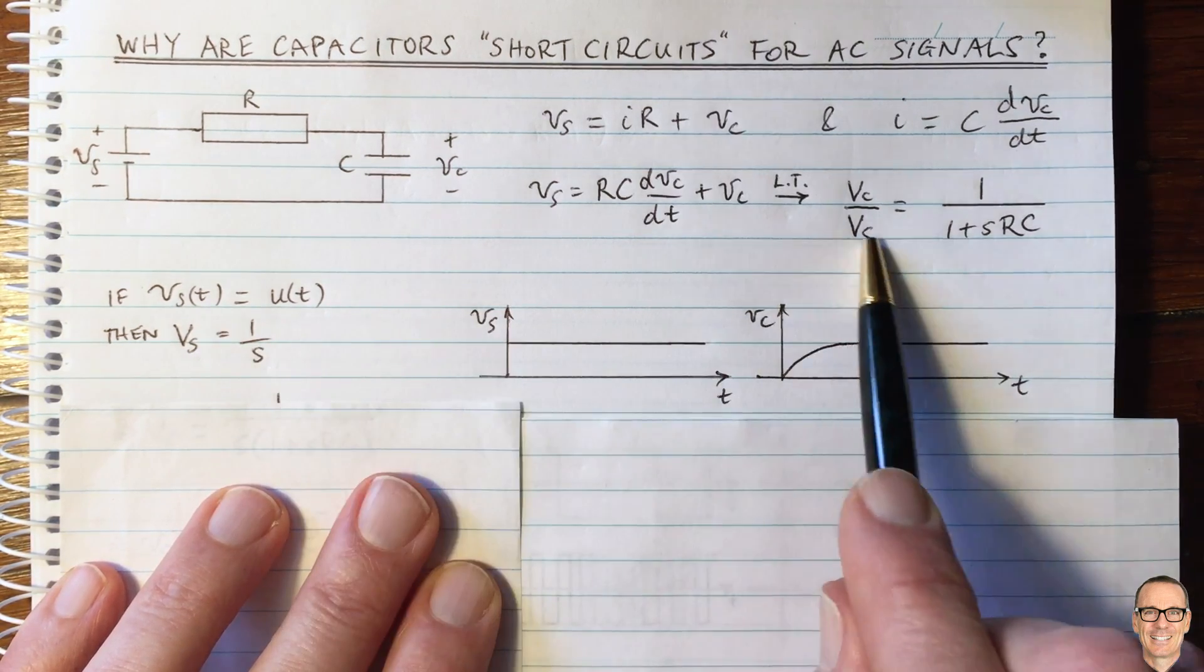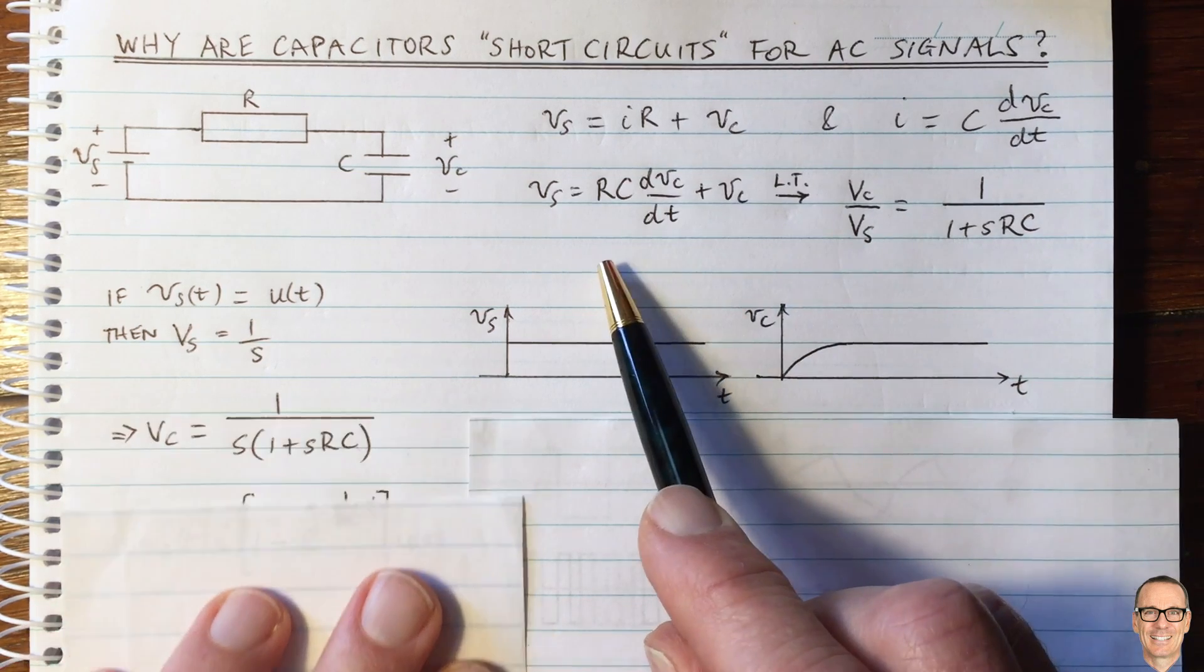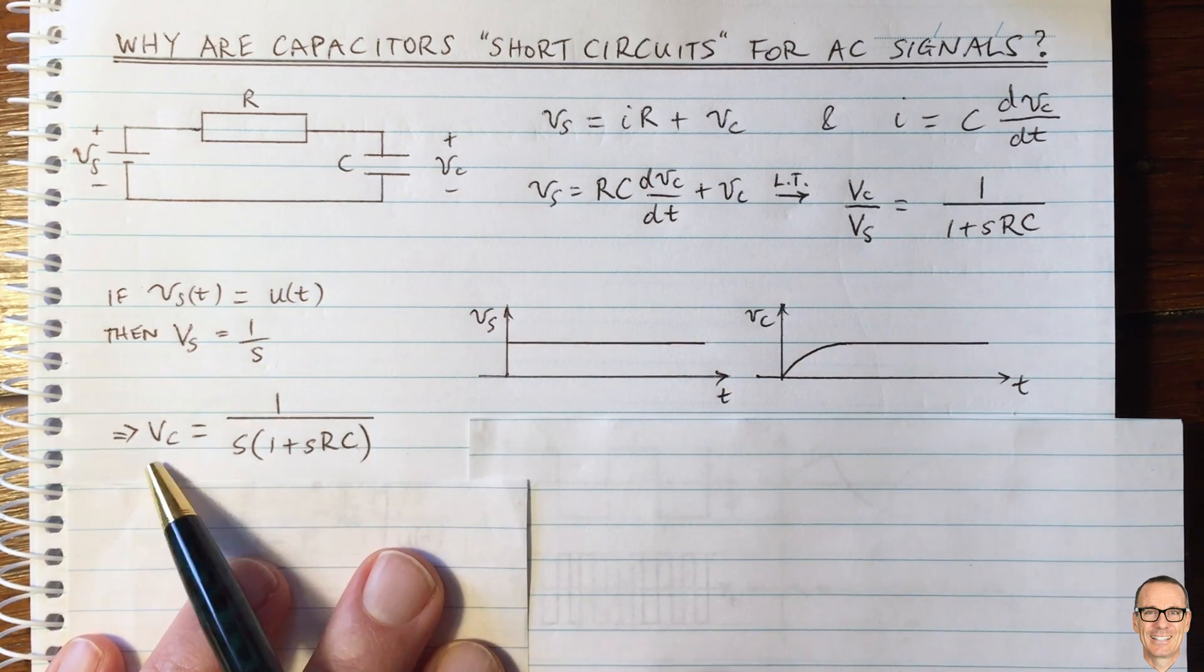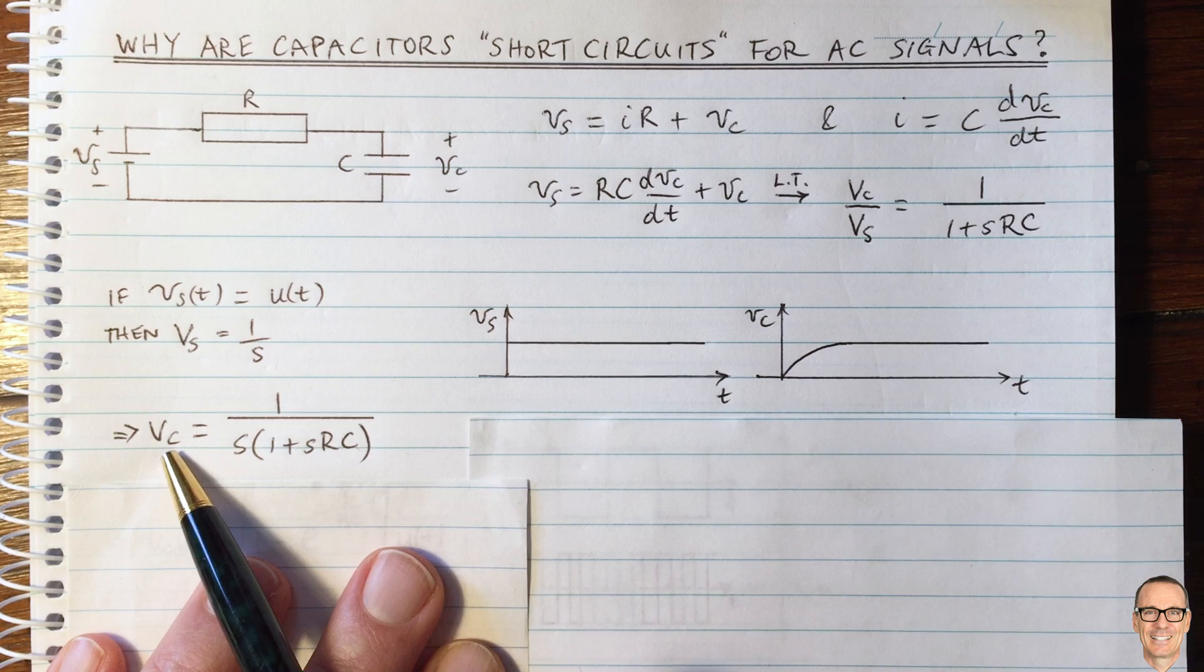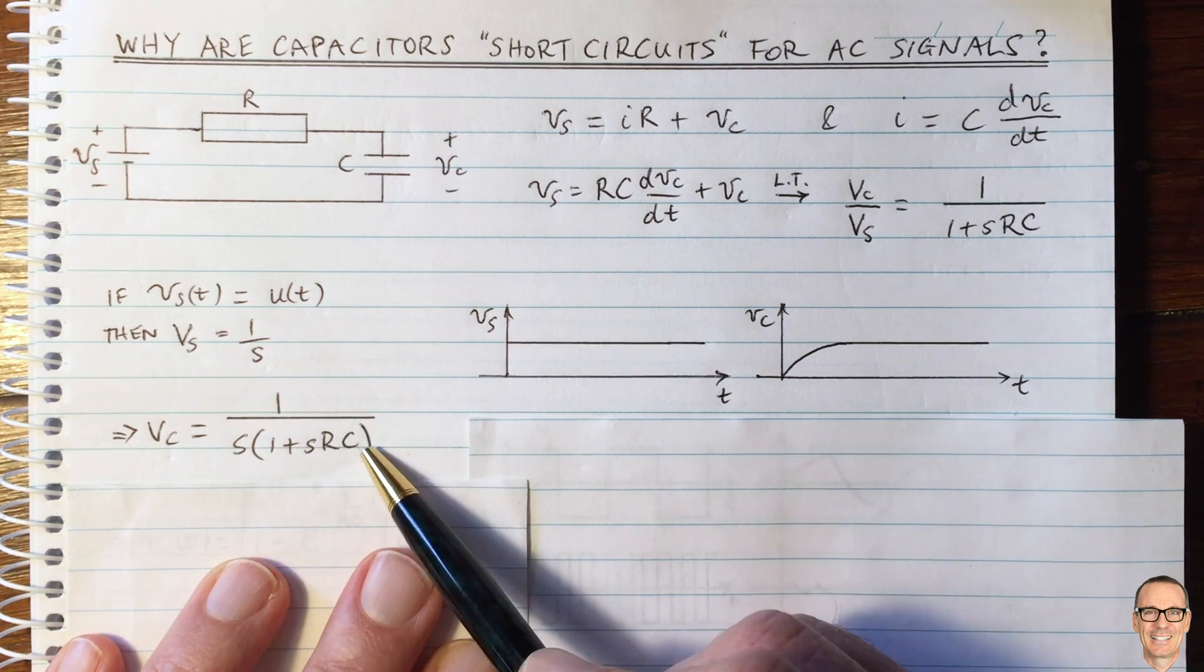Then in Laplace domain, this is one on S, we can substitute it in over here and we can see that the resultant voltage across the capacitor in Laplace domain will be by this function.